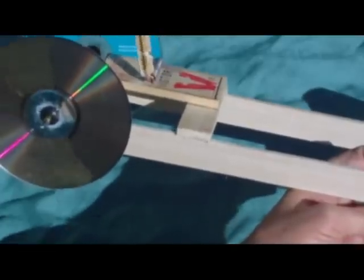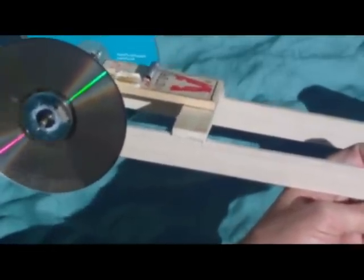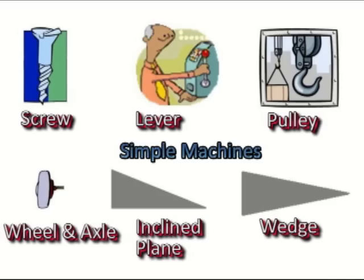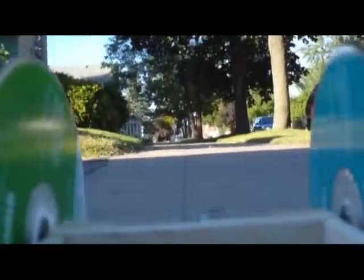To understand how energy is transferred from the spring to the rotating wheels, we need to look at two of the six simple machines: the wheel and axle, and the lever. These two simple machines are connected together to power the mouse trap car.